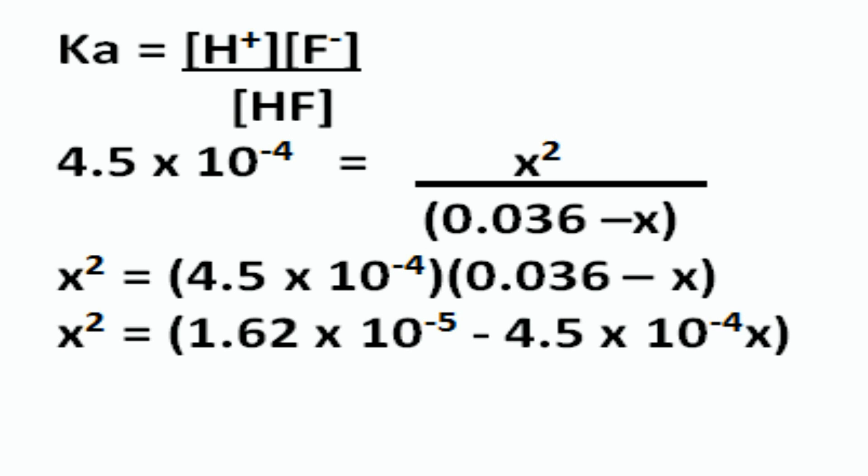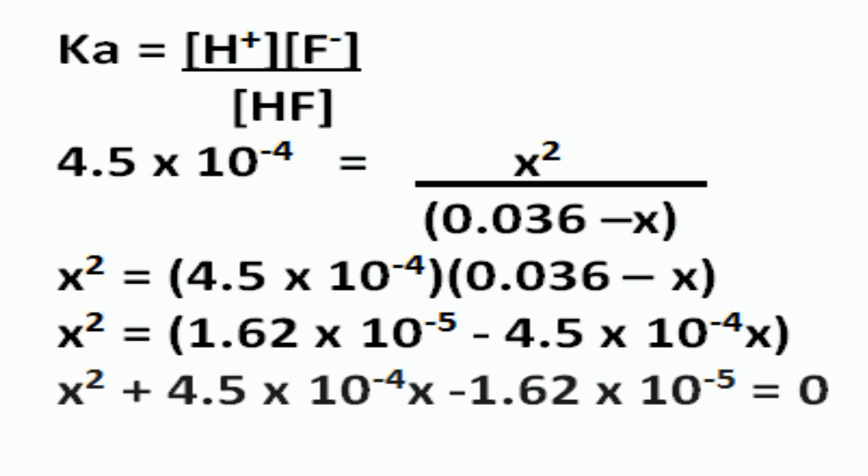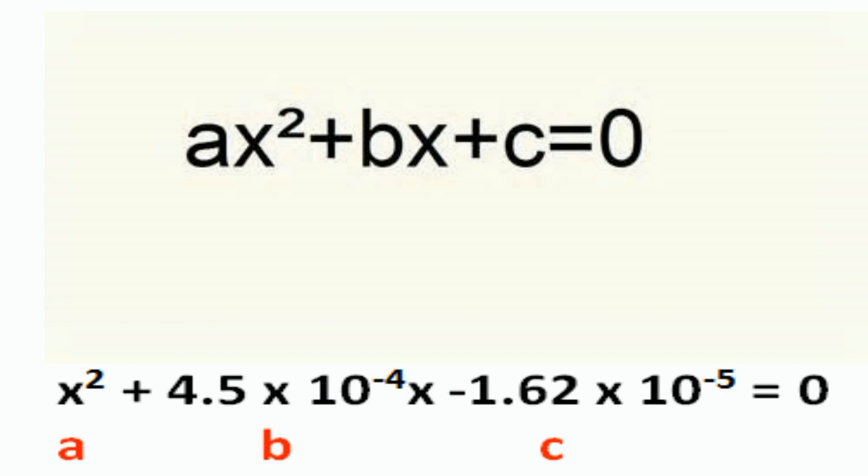After clearing the parentheses, X squared equals 1.62 times 10 to the minus 5 minus 4.5 times 10 to the minus 4 X. This generates a quadratic equation: X squared plus 4.5 times 10 to the minus 4 X minus 1.62 times 10 to the minus 5 equals 0.